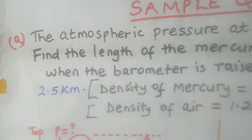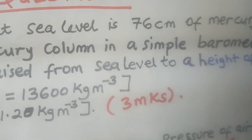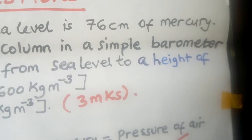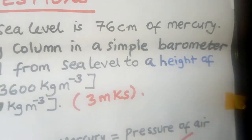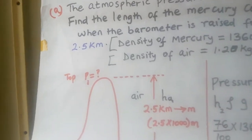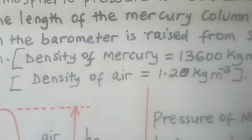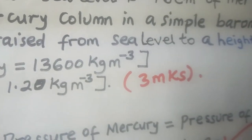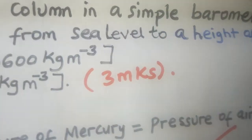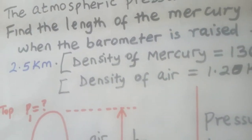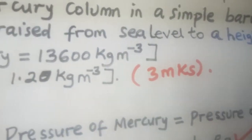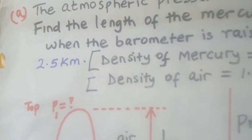Question A: The atmospheric pressure at sea level is 76 centimeters of mercury — that is at the bottom of the mountain, the barometer was reading 76 centimeters of mercury at sea level. Find the length of the mercury column in a simple barometer when the barometer is raised from sea level to a height of 2.5 kilometers.